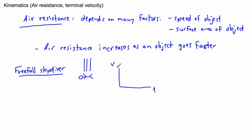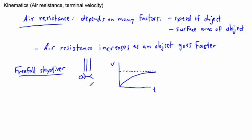Initially your speed is going to increase because you're still accelerating. But it will eventually reach some constant value. Your speed might do something like this on a graph, approaching a dotted line that it never quite reaches — some sort of asymptote that your speed approaches over time.